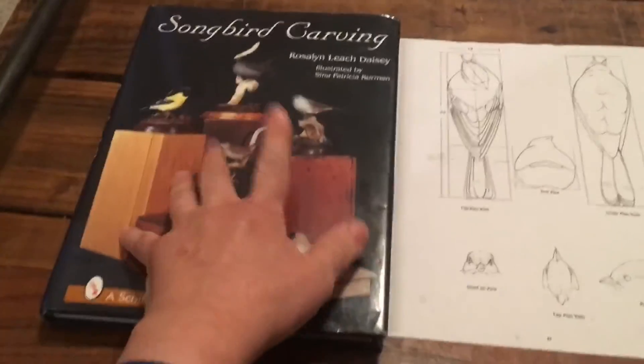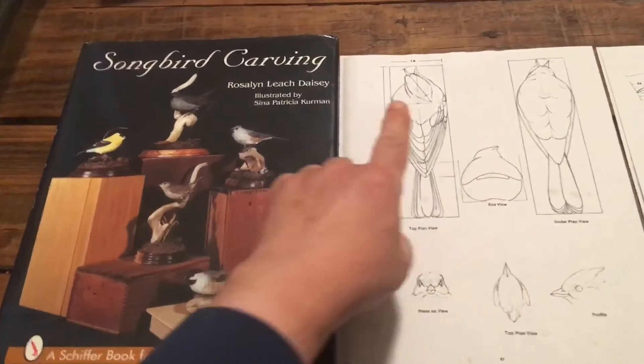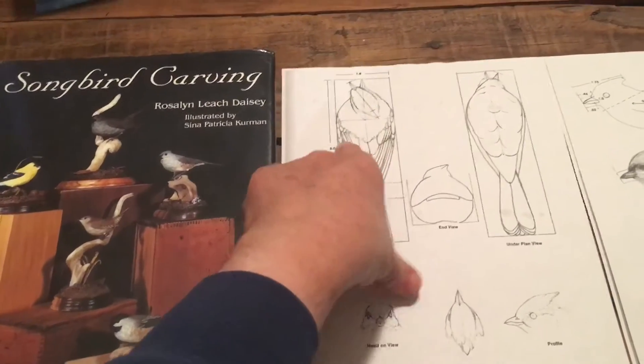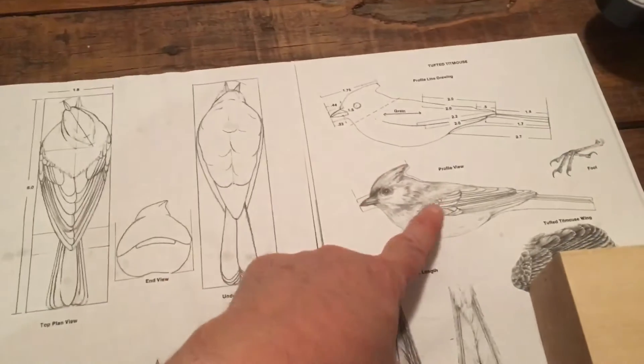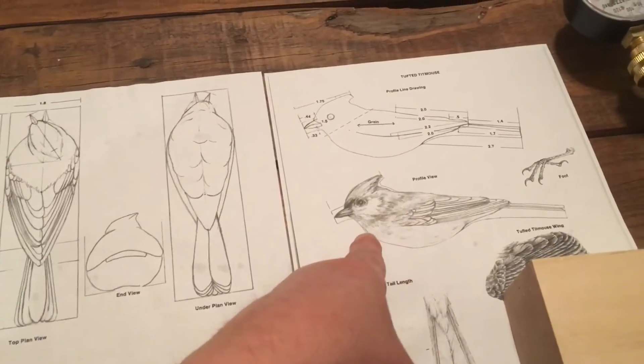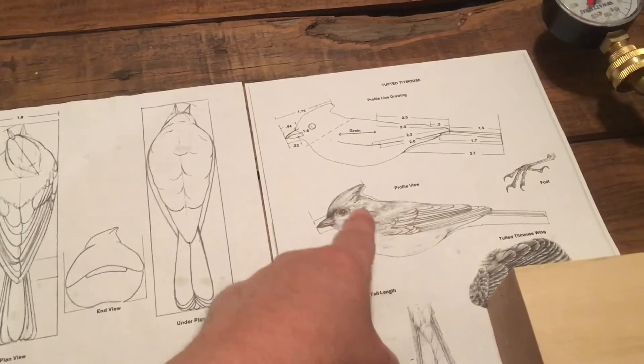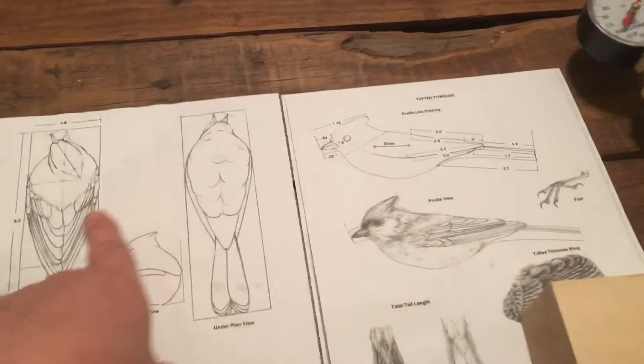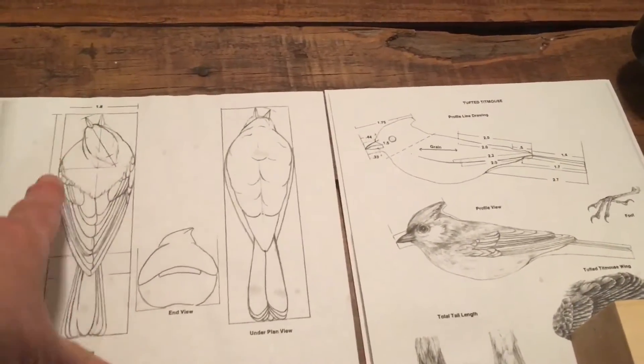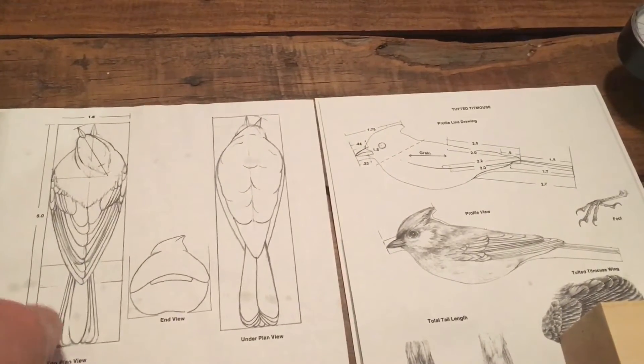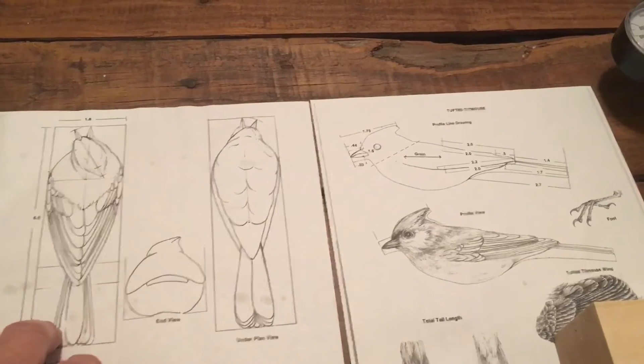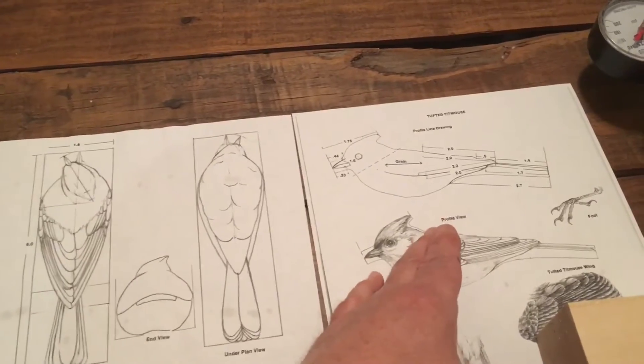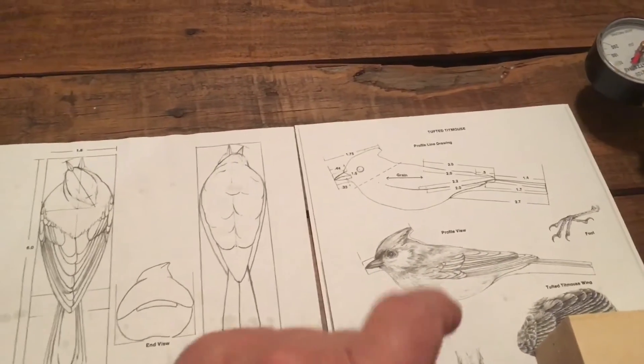Now this book has a couple of different patterns in it for carving a bird with a turned head. One way is to actually, when the bird's in the profile stage like this, cut the head off, find the center, turn the head and glue it back on.